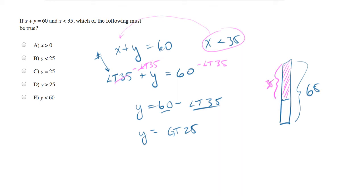So we could subtract all the way to 35, in which case we'd have 25 left over. But we might subtract less than that, in which case the number would be greater. So we're left with y is equal to something greater than 25, and we can convert this into y is greater than 25.